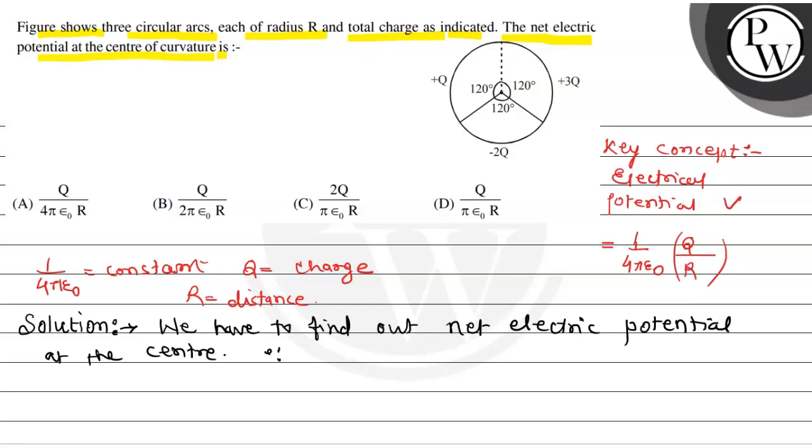Since potential is a scalar quantity, therefore total V net will be V due to q plus V due to minus 2q plus V due to 3q.